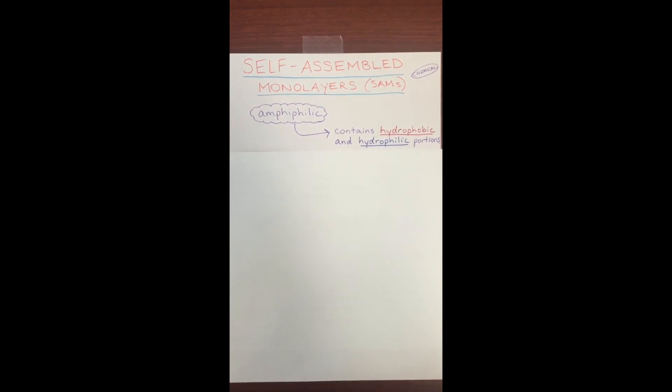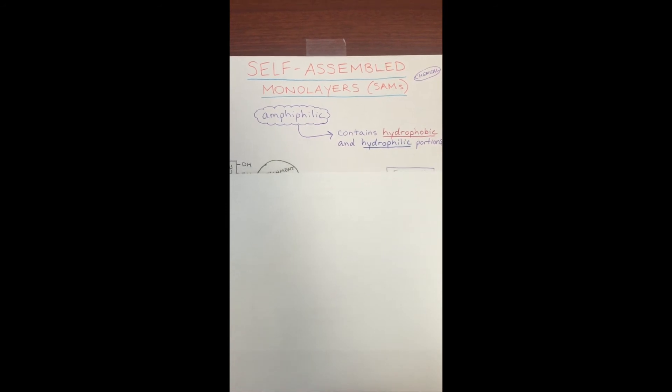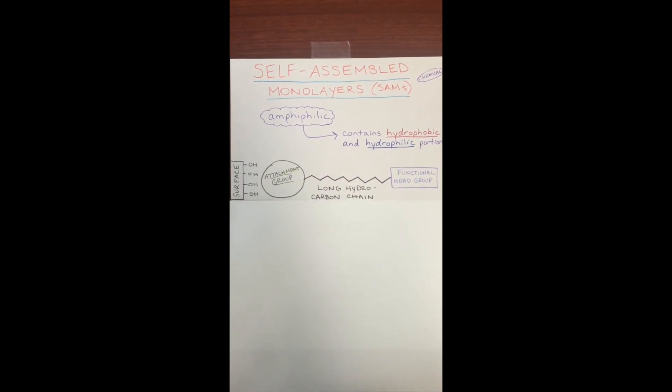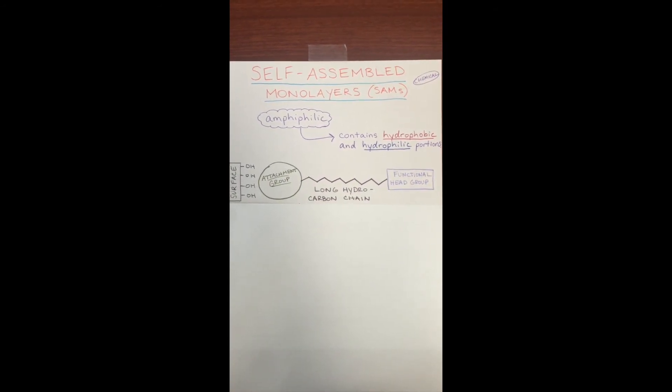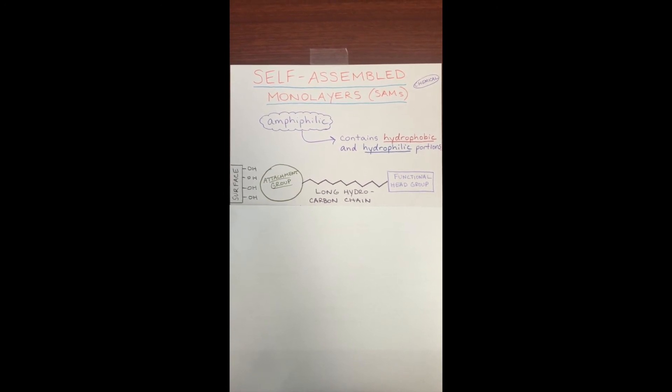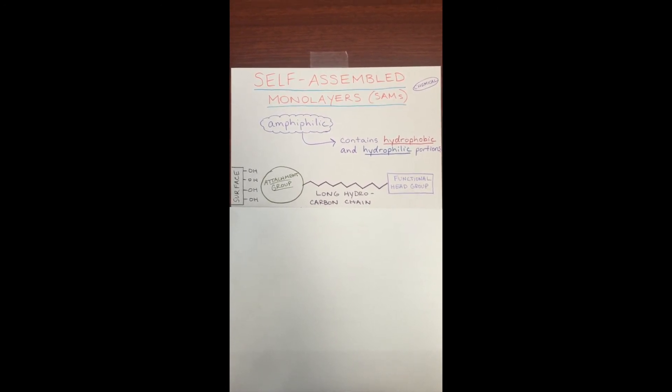SAMs are used for materials that have hydroxyl groups on their surface, such as glass and metal oxides. The actual SAM contains an attachment group, a long hydrocarbon chain, and a functional head group.